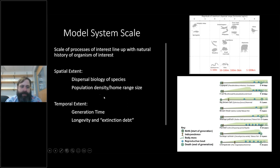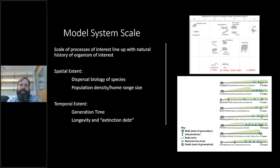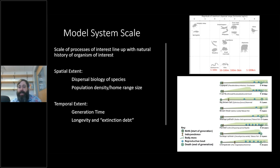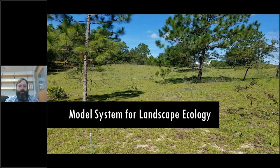The second part is matching up the temporal extent. You want to think about the generation time of the organism you study, because we need to see what happens over multiple generations to get at the idea of extinction debt — where maybe the first or second generation aren't affected, but it's the compounding effects that happen as you decrease reproduction or survival of adults. This figure shows the distribution of generation times for different species. If your model system was based on chimpanzees, your generation time is 25 years — way too long for a dissertation. You realistically want species with multiple generations in a single year.